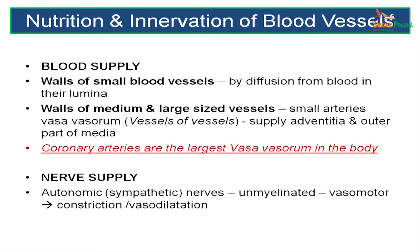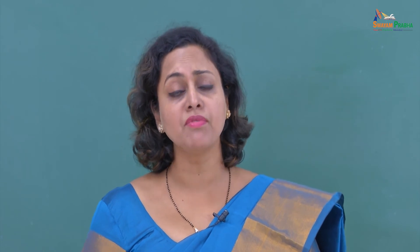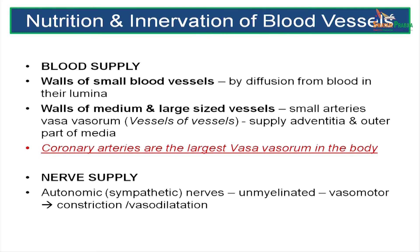The inner layers of a blood vessel get nutrition through diffusion through the layers. The internal elastic lamina is of a fenestrated type allowing diffusion of nutrients and oxygen to supply the inner layers. In larger vessels with thicker walls, the outer half is supplied by vasa vasorum — vessels within vessels. The largest vasa vasorum of the body are the coronary arteries. The nerve supply of blood vessels is autonomic, with unmyelinated nerve fibres causing vasoconstriction or vasodilatation as required.